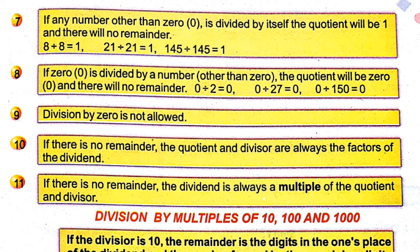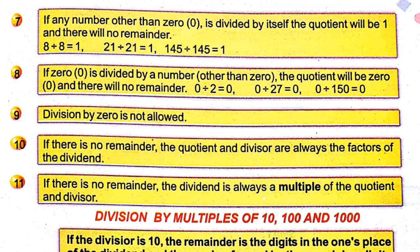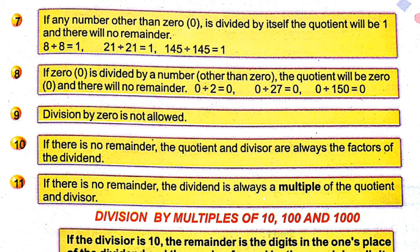Fact 8: if 0 is divided by any number other than 0, the quotient will be 0 and there will be no remainder. For example, 0 divided by 2 equals 0 with no remainder. 0 divided by 27 equals 0, no remainder. 0 divided by 150 also gives quotient 0 with no remainder.